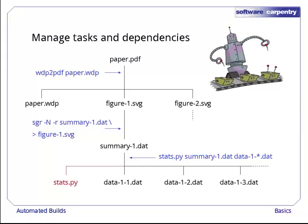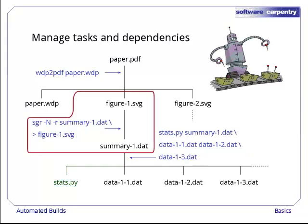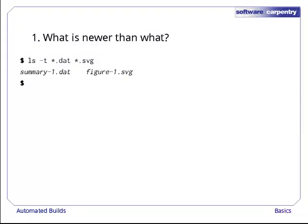This is all a bit much to digest at once, so let's look at the simplest piece. How can we get make to recreate figure1.svg automatically whenever summary1.dat changes? Let's start by going into the directory containing the files we're using in the paper and use the ls command to get a listing of what's there.